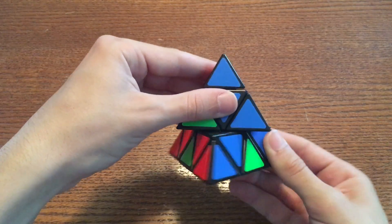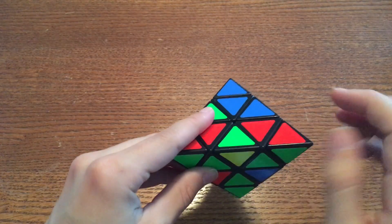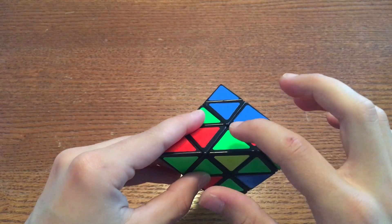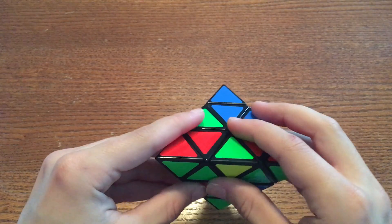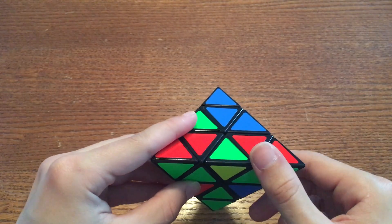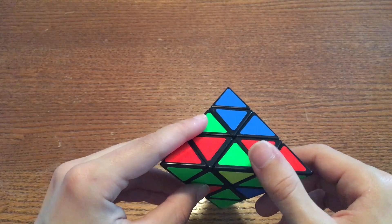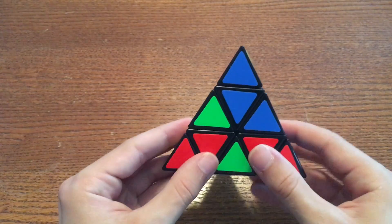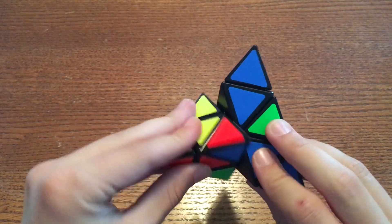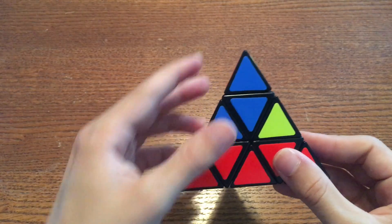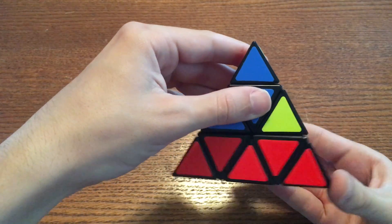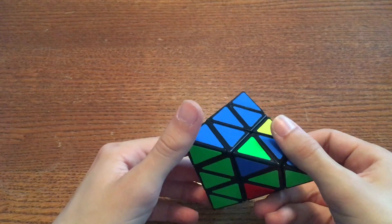So if I turn the bottom layer like this, the edge that is down here now is green-yellow and the pieces surrounding it are green-red. So it's obviously not in the correct place, so we're good to go. Do the algorithm and as soon as you're done, just turn the bottom layer back to where it was. There we go.